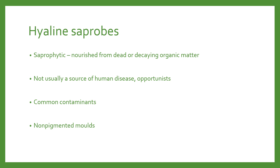The next fungal class is the hyaline saprobes. Hyaline means transparent or non-pigmented, referring to the spores or conidia. These are what you're most likely to come across in your refrigerator — they are saprophytic, meaning they live on dead or decaying organic matter. You'll often see them growing on fruits and vegetables or on your bread. They are not usually a source of human disease; they are opportunistic organisms and common contaminants on microbiology plates.